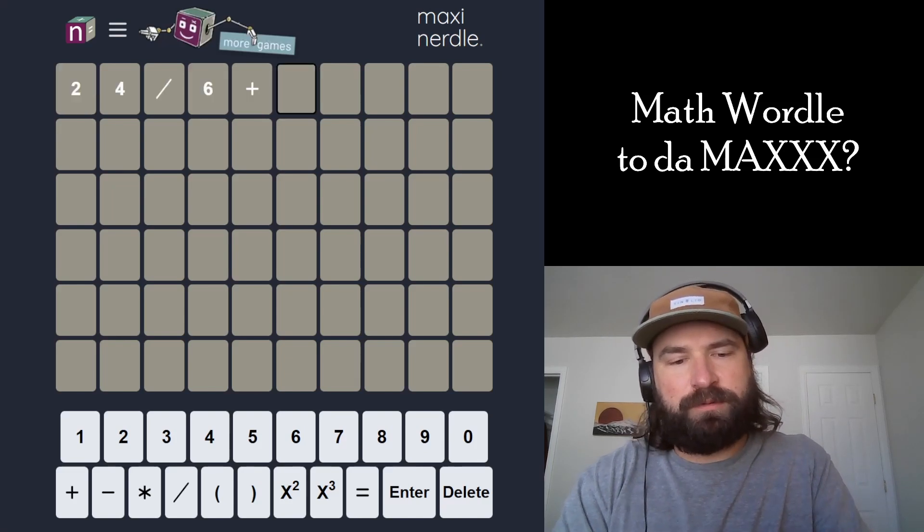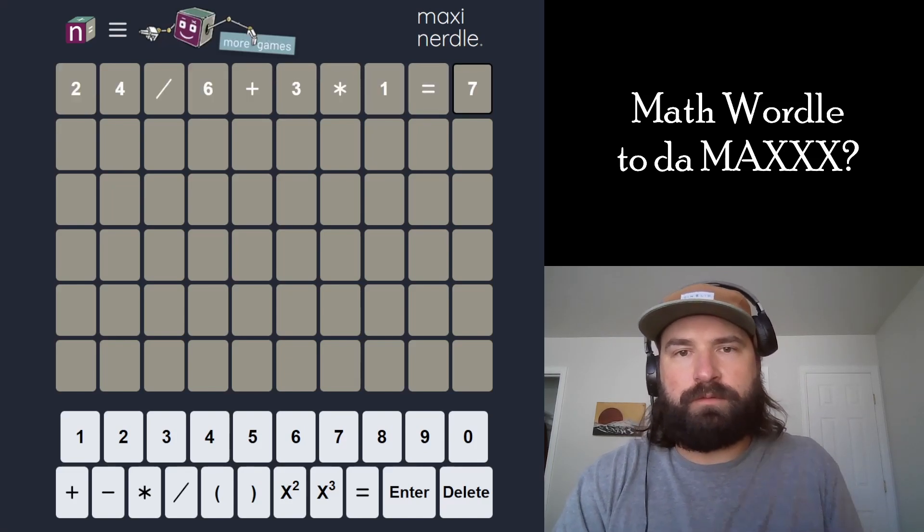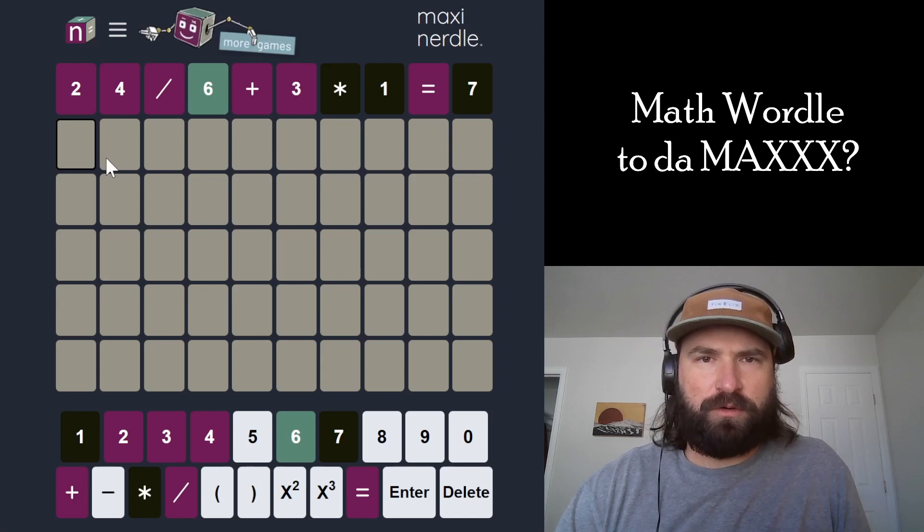Let's smash a Math Wordle. We've got 24 divided by 6 plus 3 times 1 equals 7. That's a lot of purple. Very cool. All right.